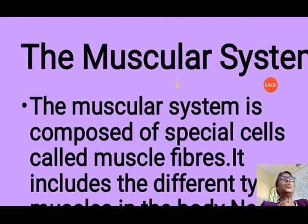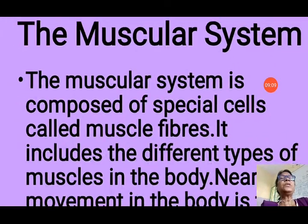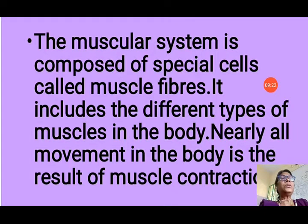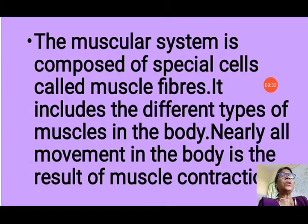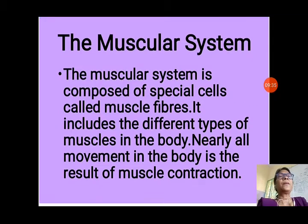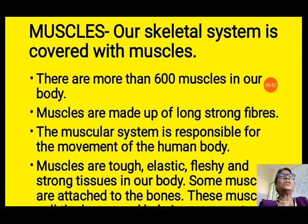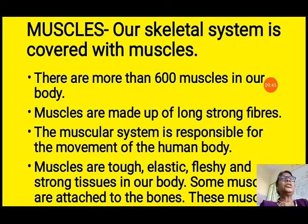Now we will discuss the muscular system. The muscular system is composed of special cells called muscle fibres. It includes different types of muscles in the body — we don't have the same type of muscle all over the body. Nearly all movement in the body is the result of muscle contraction and relaxation. Our skeletal system is covered with muscle, so you cannot see any of the bones. There are more than 600 — nearly 640 — muscles in our body.